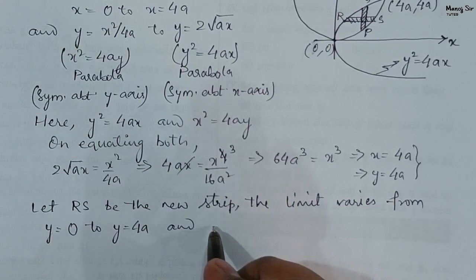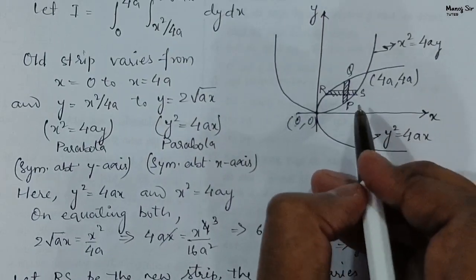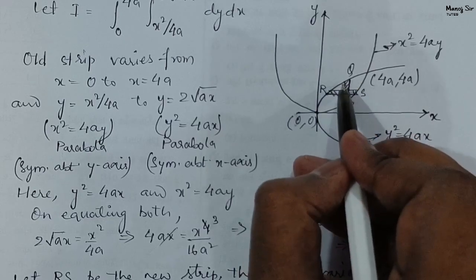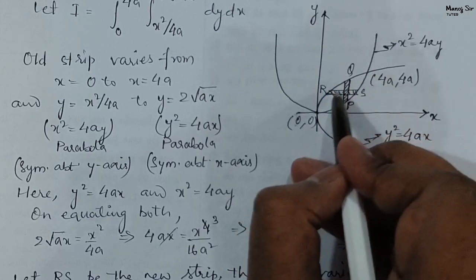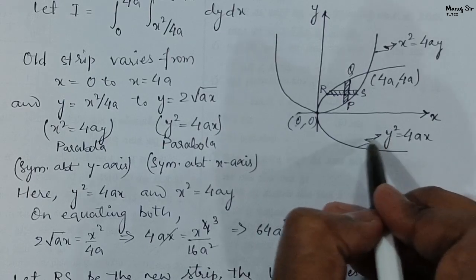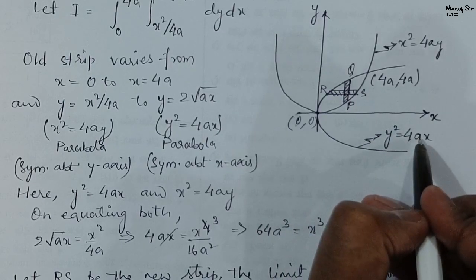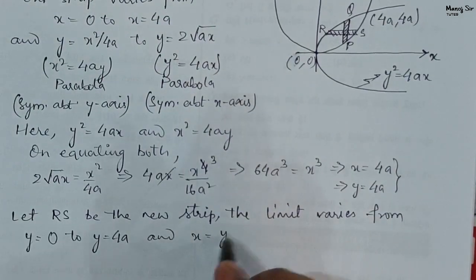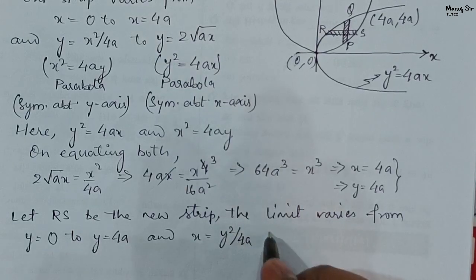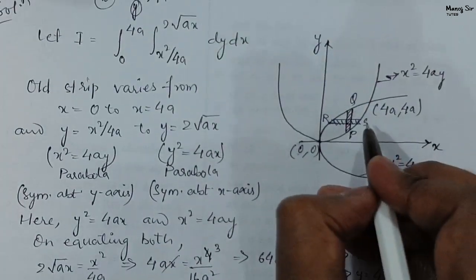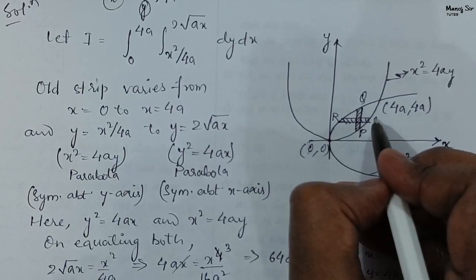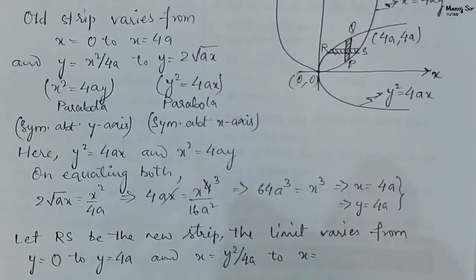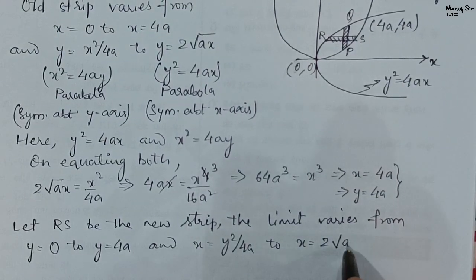Now we write the x limits. The left end R of the strip lies on the curve y² = 4ax, from which x = y² / 4a (lower limit). The right end S lies on the curve x = 2√(ay) (upper limit). So x goes from y² / 4a to 2√(ay).